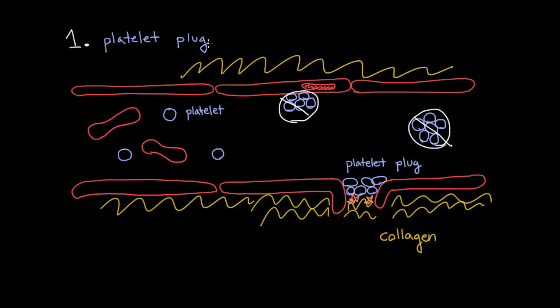So there's a second step which makes this plug stronger. And that second step involves something called fibrin. And fibrin is not a little mini cell like platelets are or a fragment of a cell like platelets are. Fibrin is just a protein. And what fibrin is going to do is it's going to come here and it's going to try to strengthen this plug by forming this mesh of protein that's going to hold all these platelets together and form a very tight object.